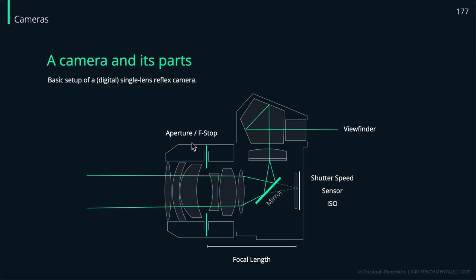Let's first have a look at a camera itself. What we have here is basically a simple digital single lens reflex camera. A few important things to note: first of all the aperture, which is the opening of the camera where the light travels through the lenses inside your camera system. Then there is the mirror which reflects the light up to your eye. Now if you press the shutter, the mirror flips to the top, light travels to your sensor, and the image is taken and stored on your SD card.